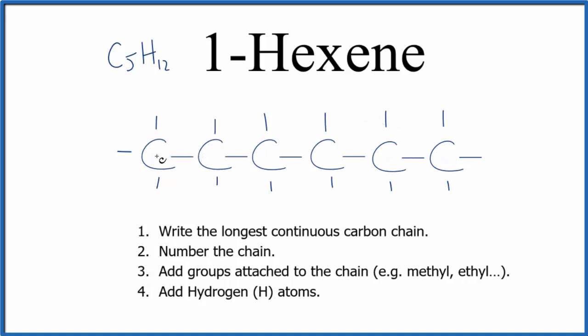Let's number the carbons. Since we have hexene, we have a double bond because of this E-N-E, and we're going to put that on the first carbon. And remember, the double bond goes between carbon atoms. So we're going to put our double bond right here.